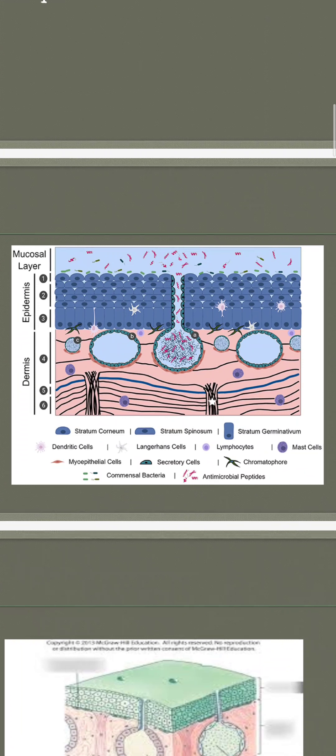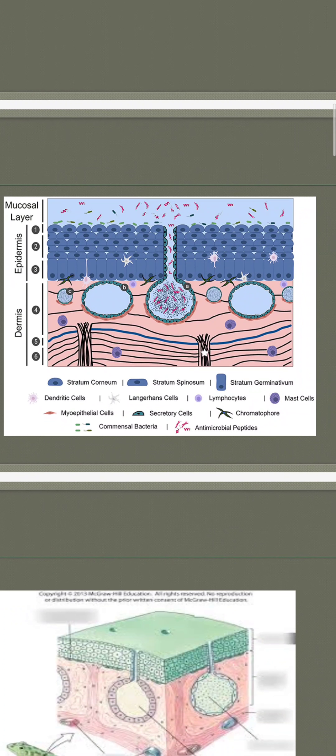Here is a diagram of the amphibian skin. The skin has dermis and epidermis layers. When we talk about skin, there are three basic layers in any kind of skin: epidermis, dermis, and hypodermis. The most outer covering of the amphibian skin is called the epidermis.